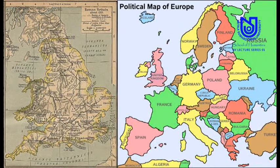To talk of periods in history makes it necessary to talk of geography as well. Let us first place England on the map of Europe. You see two maps following one another — the first one is of Britain as a Roman colony, which it was till 450 AD, and the other the current map of Europe where you can place England. In both maps, notice how the location of England becomes a key factor in exposing the country to different political and cultural influences over the ages.